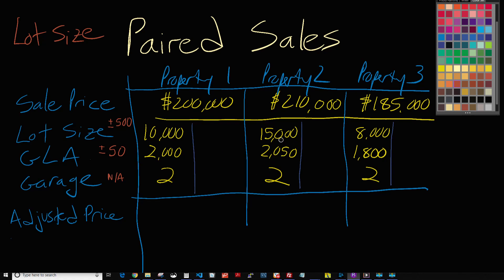The tool checks whether all other features are the same except for lot size, and it allows you to set tolerances. For example, anything within plus or minus 50 square feet can be considered similar. Property one and property two are within our tolerance of plus or minus 50 square feet, so those are considered the same. Garage count has no tolerance — it must be identical. These two properties are identical except for lot size, making them matched pairs we can use to calculate a lot size adjustment.